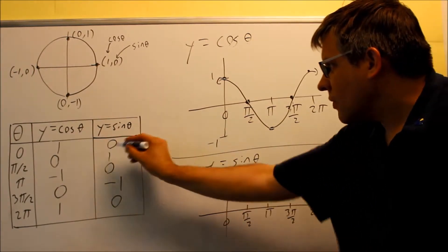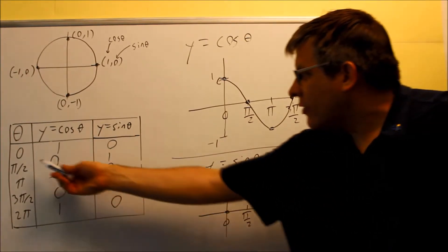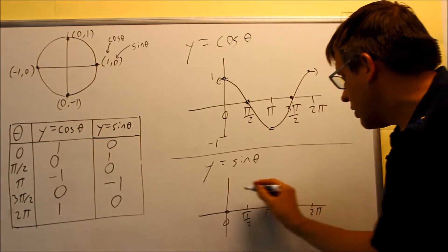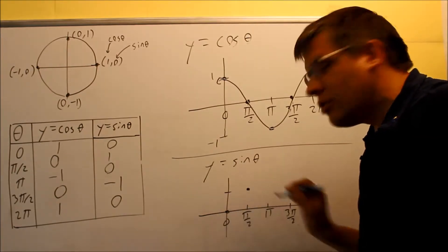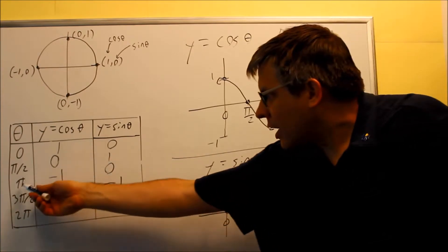So now I'm at zero, I'm at zero. Then when I'm at pi over two, the next value is one. That's this one. I keep on going. At pi, I'm at zero.